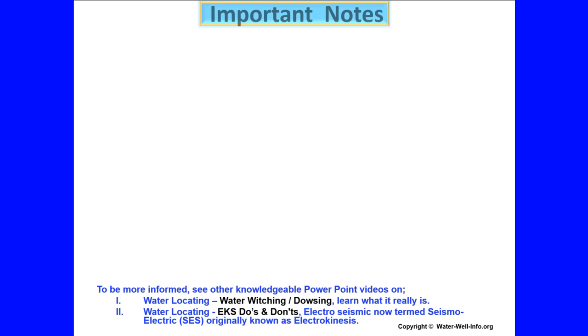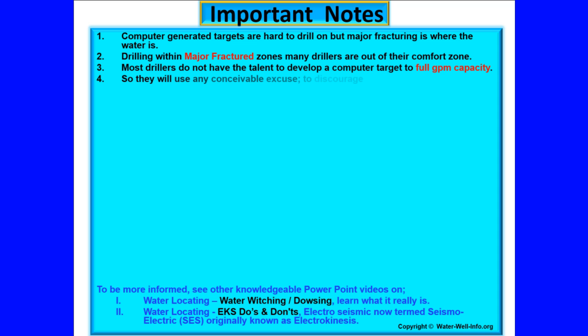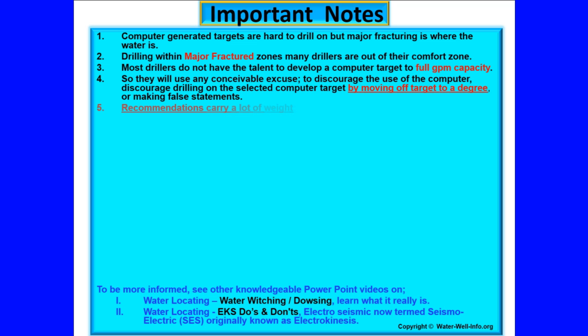Important Notes. Computer generated targets are hard to drill on, but major fracturing is where the water is. Drilling within major fracture zones, many drillers are out of their comfort zone. Most drillers do not have the talent to develop a computer target to full gallon per minute capacity. So they will use any conceivable excuse to discourage the use of the computer, discourage drilling on a selected computer target by moving off the target to a degree, or making false statements.